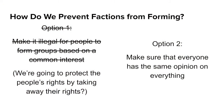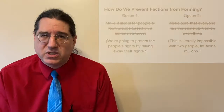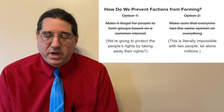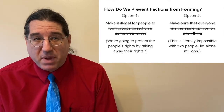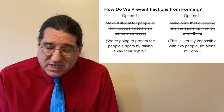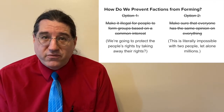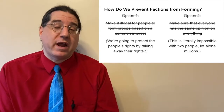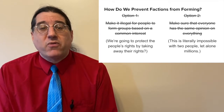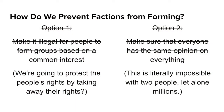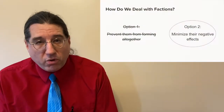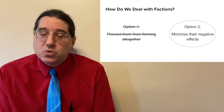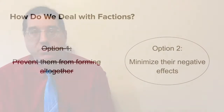The second way to stop factions from forming is to make sure that everyone agrees on every issue, so there's never any division or conflict in society that has to be resolved by the government. Madison says this solution is just downright impossible, because as long as people are different, they will want different things, and as long as they want different things, they're going to try to get those different things — and so you're going to get factions trying to control the government. So if we can't stop the factions from forming, we have to go with option two and control their effects, making sure no faction gets control of the entire government and uses its power at the expense of the people's rights.